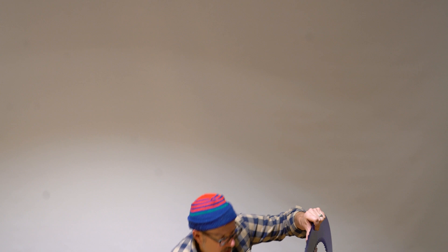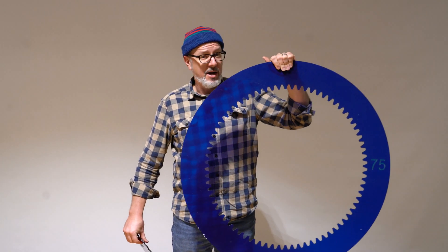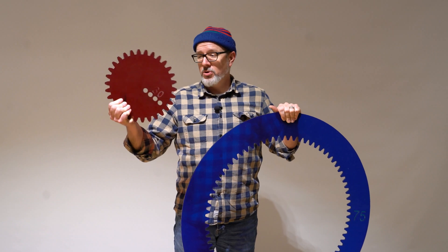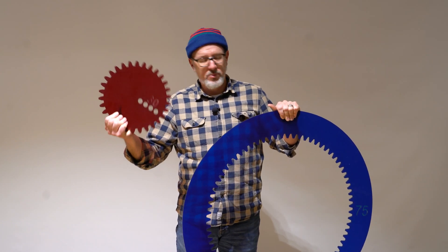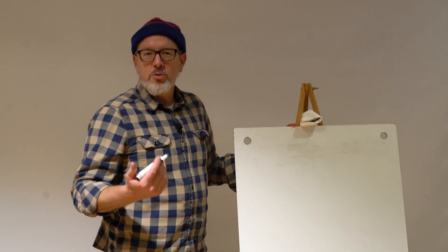Okay, so this wheel has 30 teeth, and this ring has 75. Let's look at the math to figure out how many points the hypotrochoid will have with a 30 tooth wheel and a 75 tooth ring. Before we do this, you have to know what a factor is.